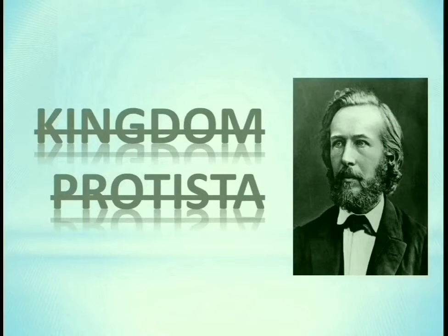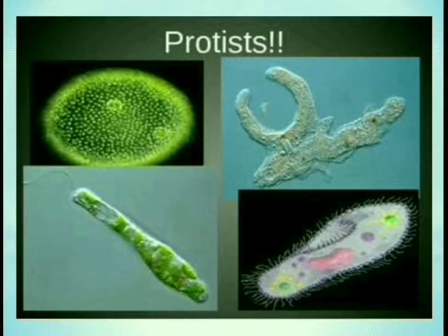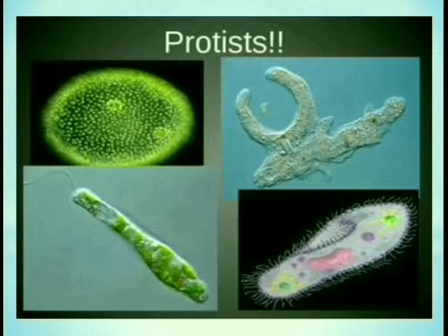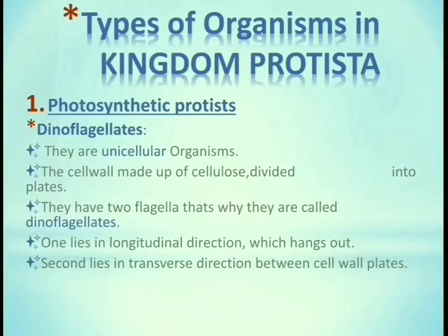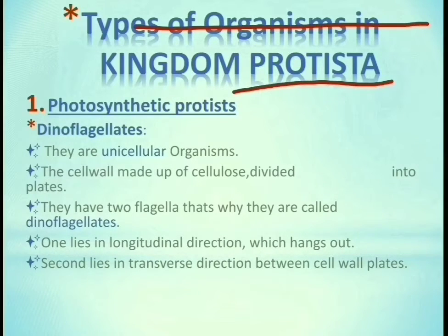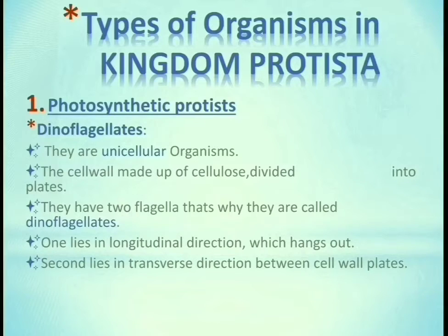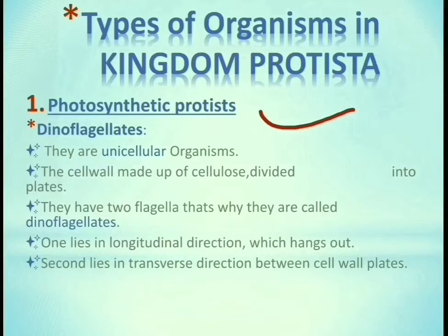Kingdom Protista is given by Ernst Haeckel and it consists of different types of organisms: photosynthetic protists, decomposers, and protozoans. Photosynthetic protists have three types further: dinoflagellates, euglenoids, and chrysophytes.